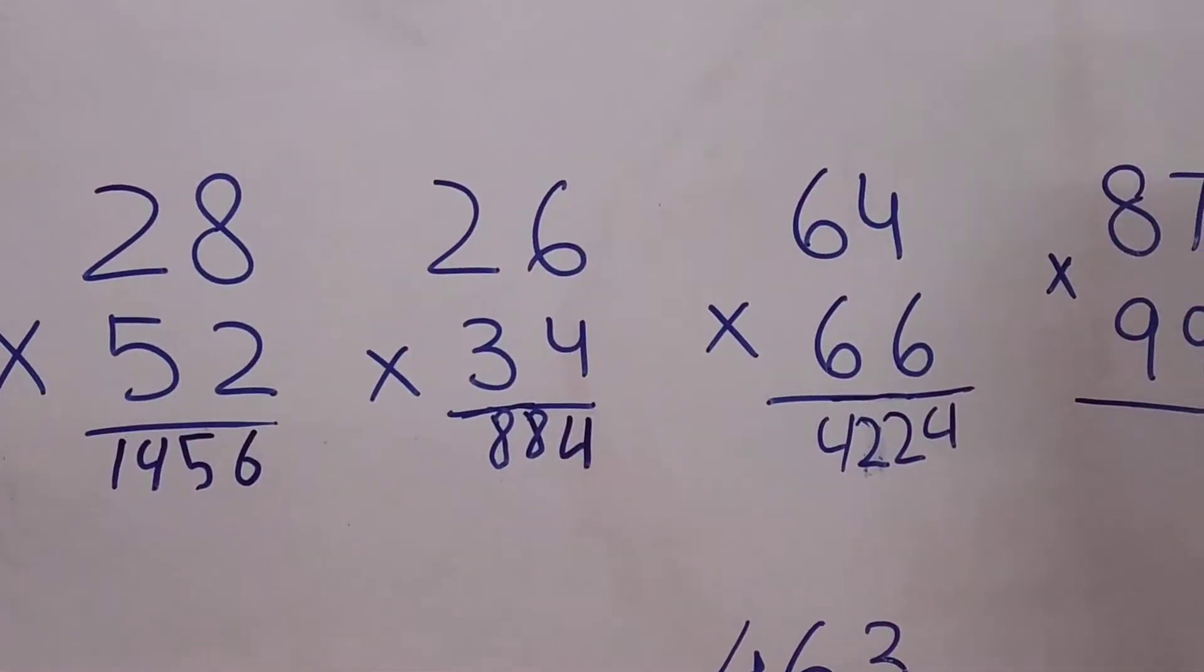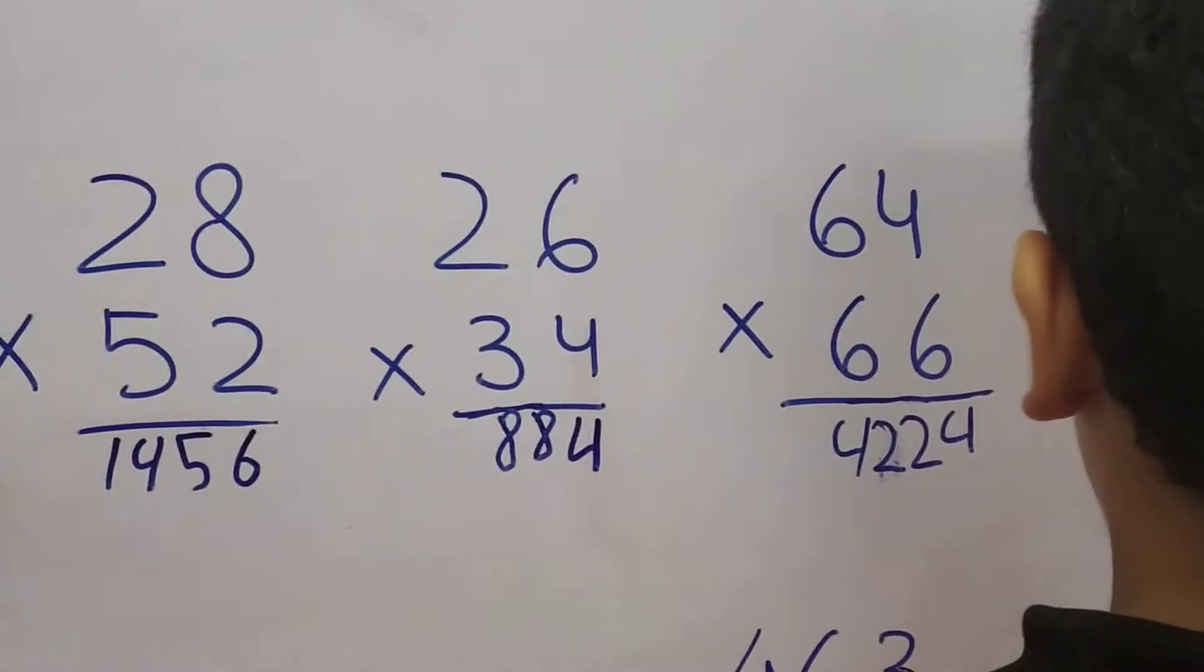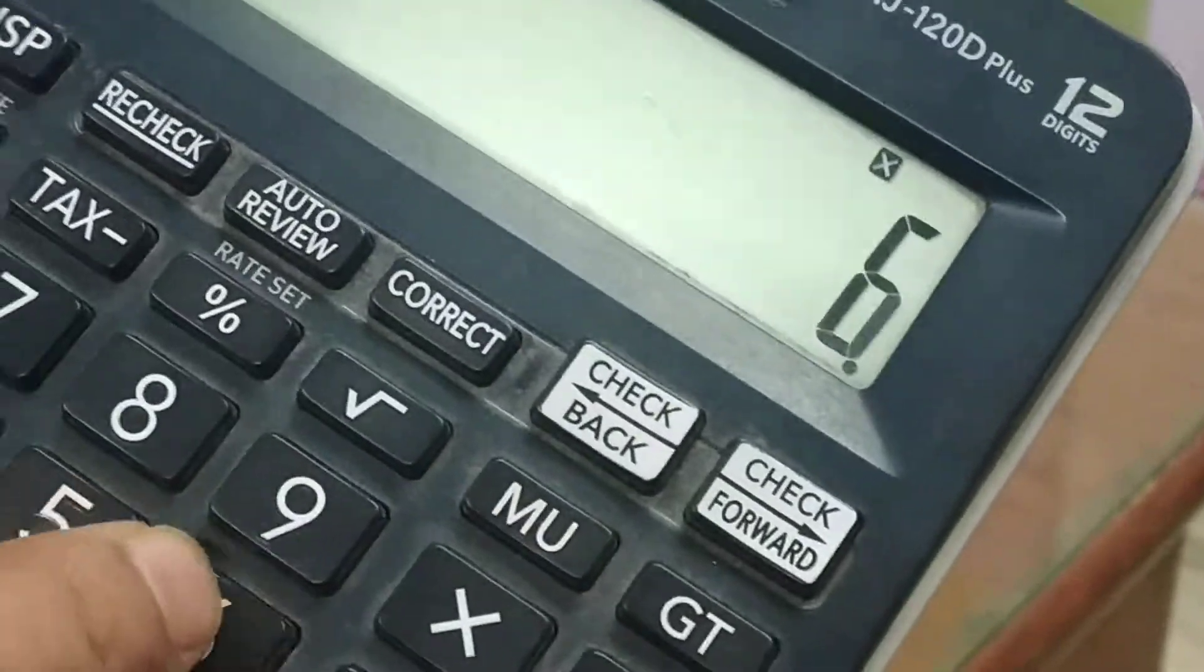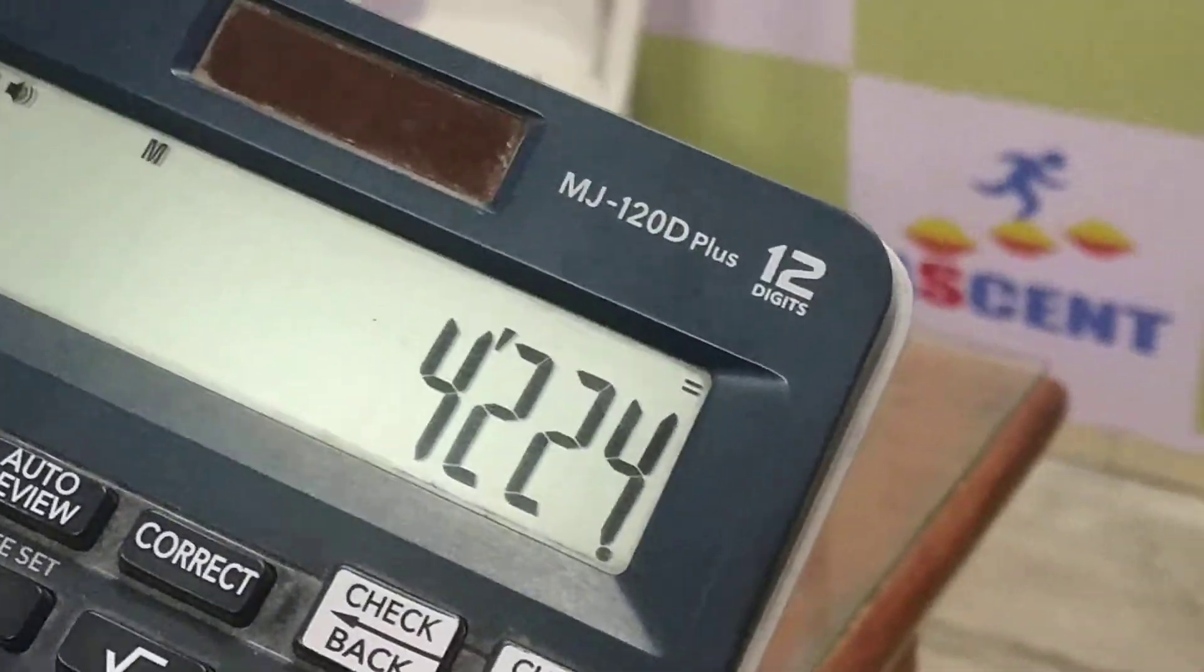And the next question that comes to him is 64 into 66. 64 into 66, answer is 4224. Wonderful.